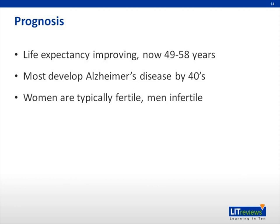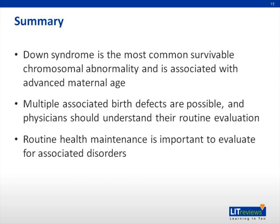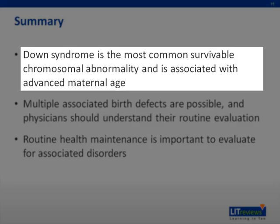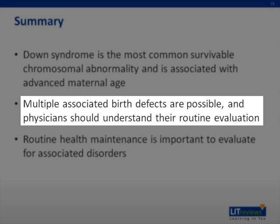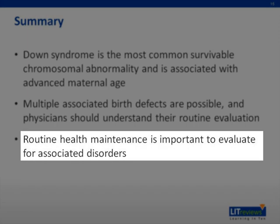The long-term prognosis for patients with Down syndrome is improving. In 1983, the median age of death was 25, but this improved to 49 by 1997 and has been reported to be up to 58 in some studies. Unfortunately, most patients develop dementia resembling Alzheimer's disease by their 40s. Infertility is present in most men with Down syndrome, but most females are fertile. In summary, Down syndrome is the most common survivable chromosomal abnormality, associated with advanced maternal age, multiple potential birth defects, and the need for routine health maintenance to monitor for associated disorders.